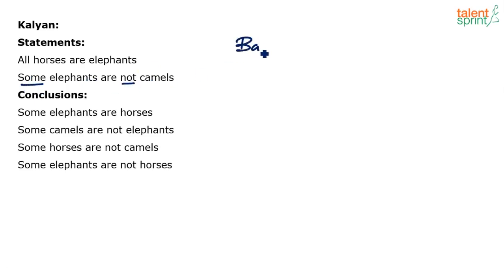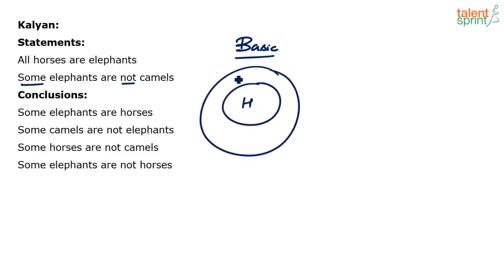Let me draw the basic diagram — the one which involves minimum overlapping. For statement 1: all horses are elephants. All the horses are inside elephants — that's the diagram for statement 1. Now for statement 2: some elephants are not camels.